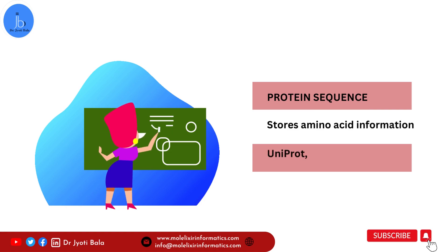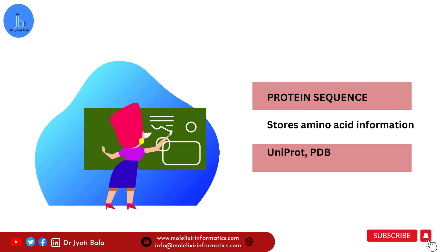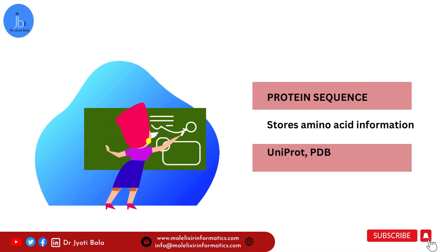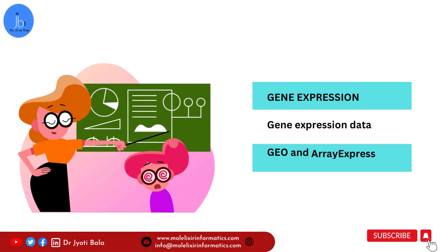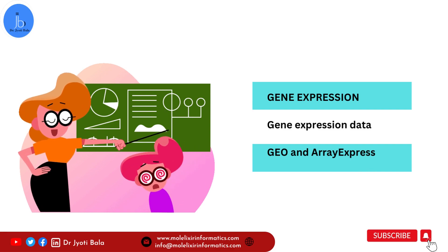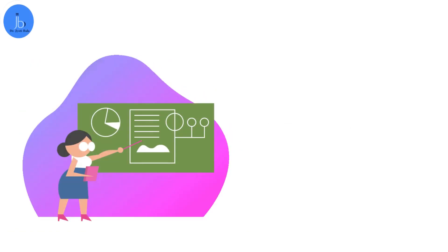If you are working on a protein-related project, then protein sequence databases are what you can explore — these store information about proteins and peptides. Examples include UniProt and PDB. If you are working on gene expression, you can try GEO and ArrayExpress.